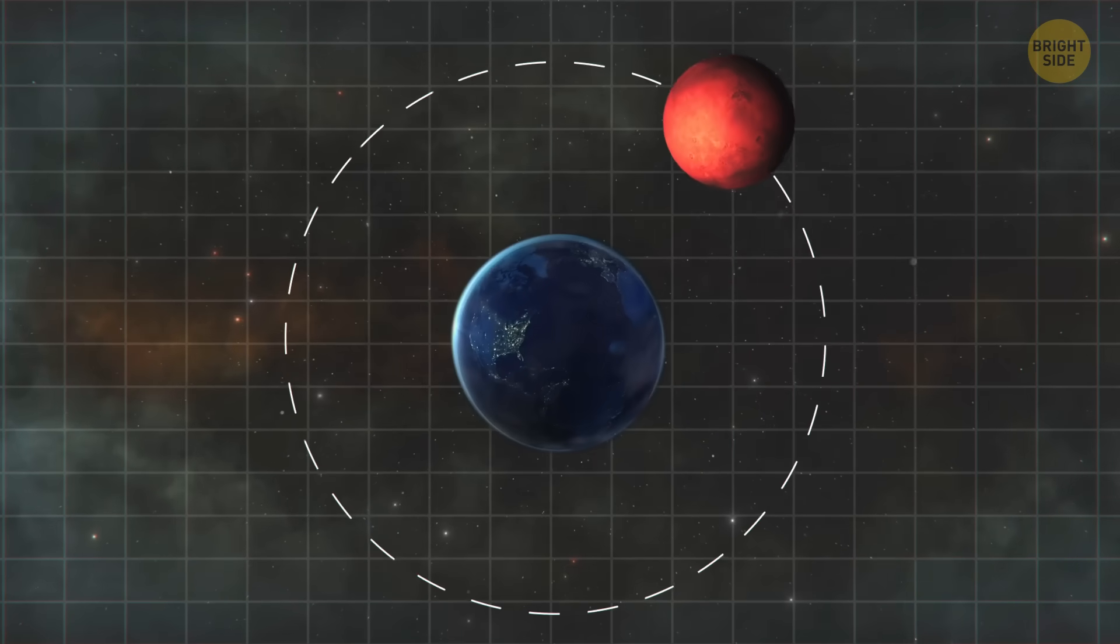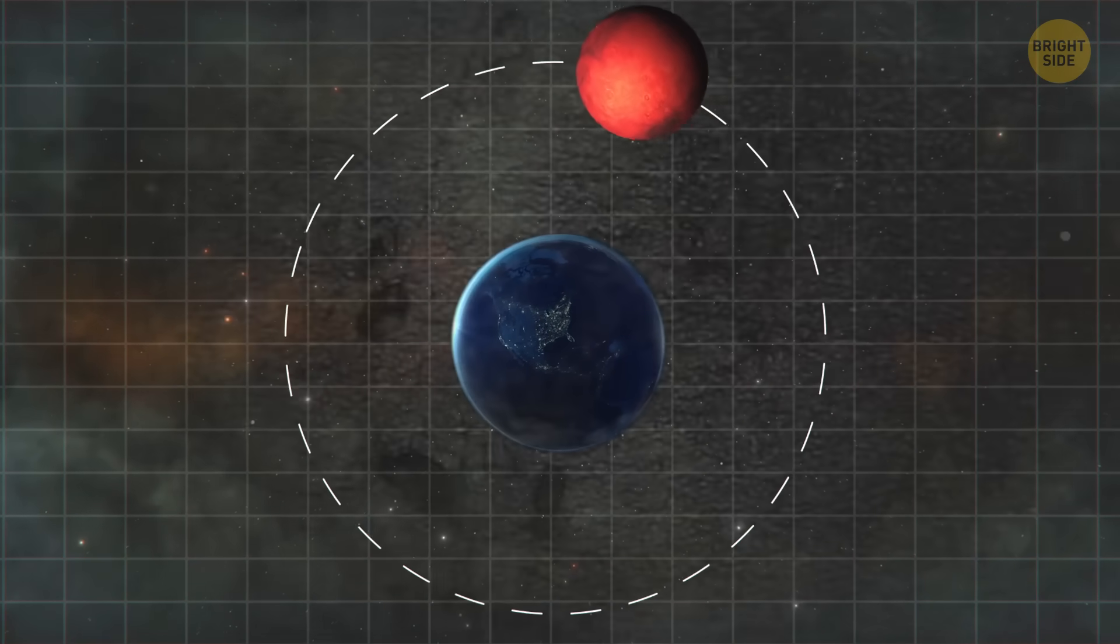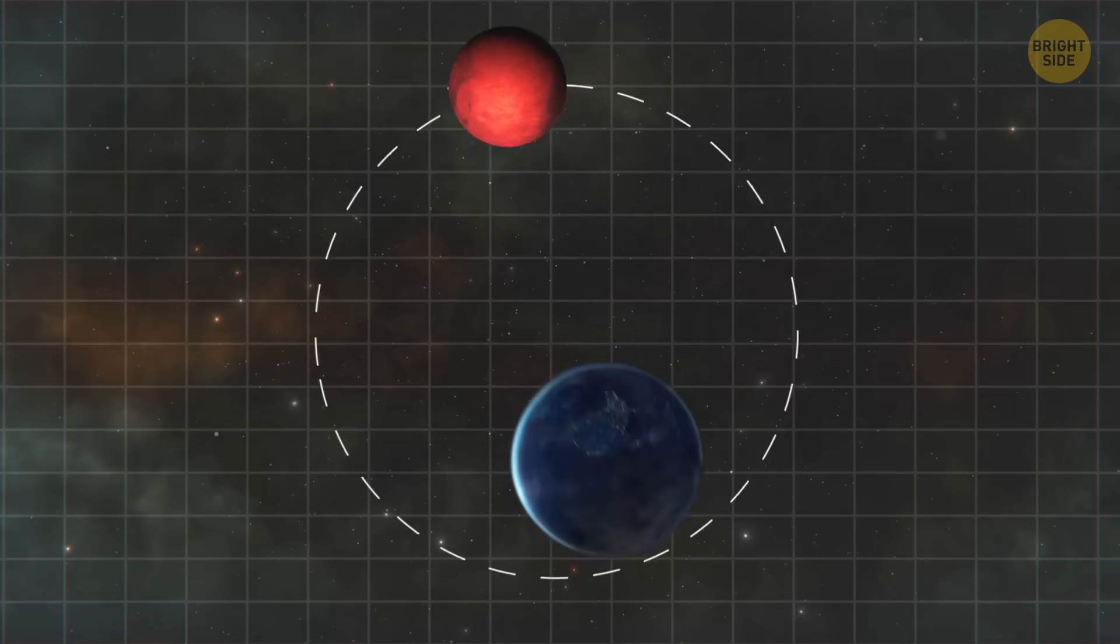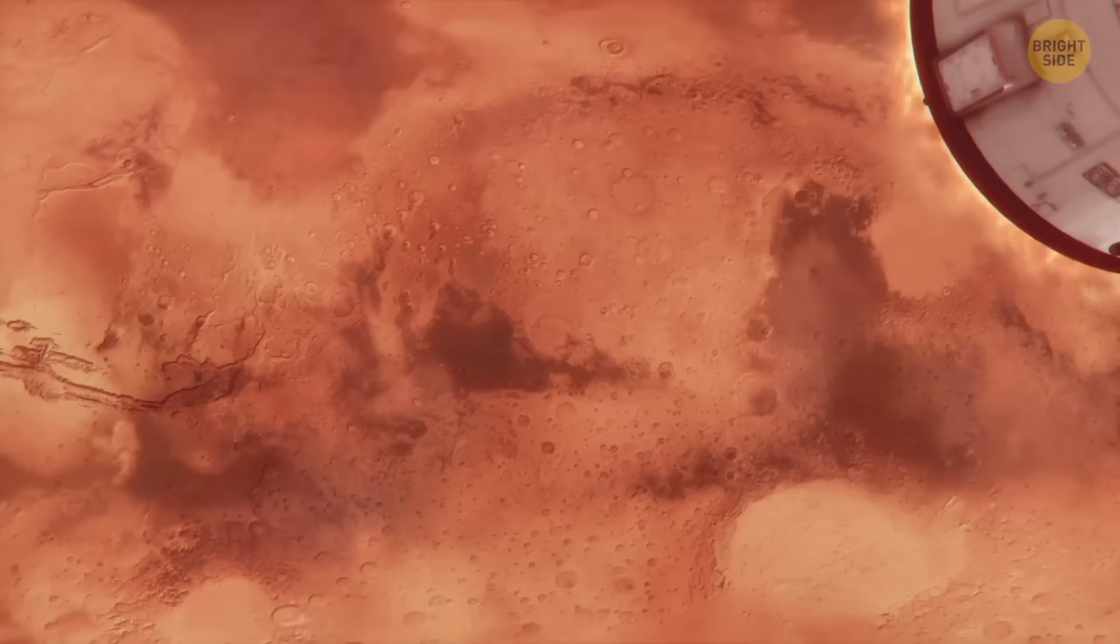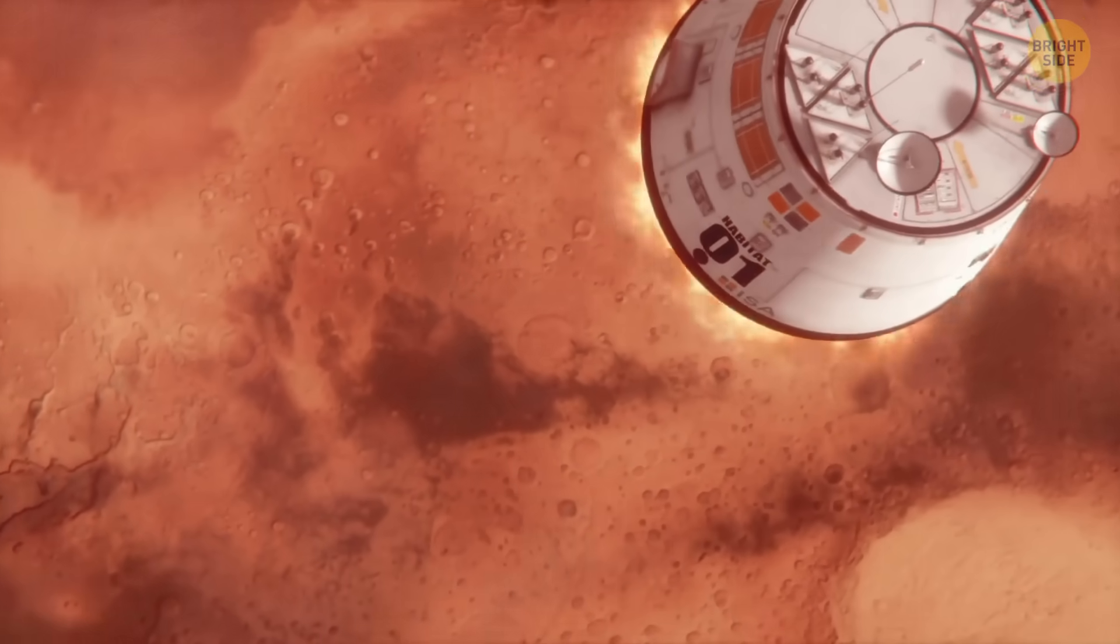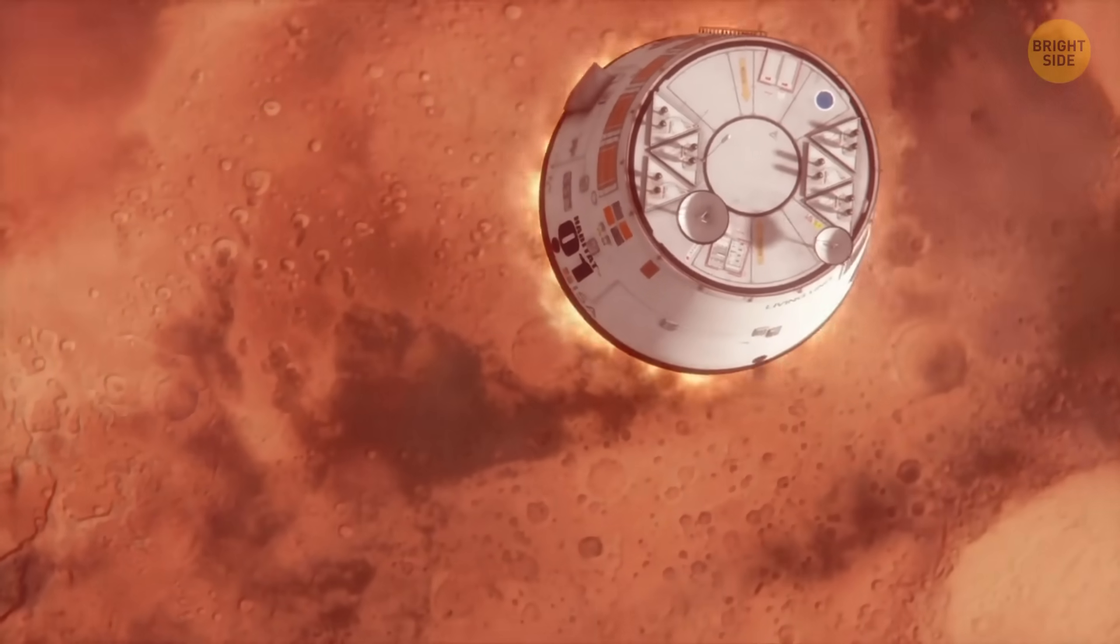Mars isn't large enough to change the Earth's orbit dramatically. But with time, the two planets would probably begin to orbit each other, creating a binary planet system. And since Mars would literally be next door, voyages to this planet would become a reality.